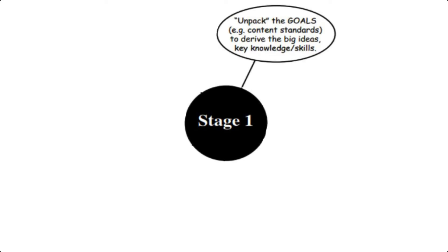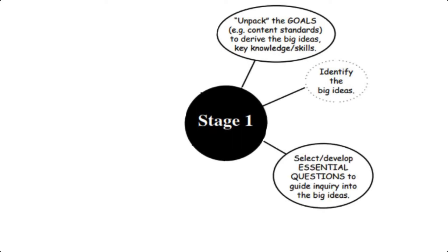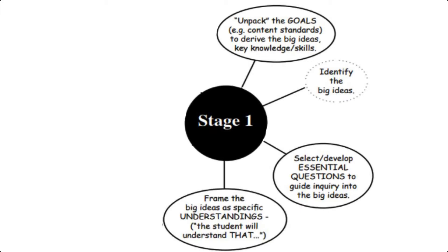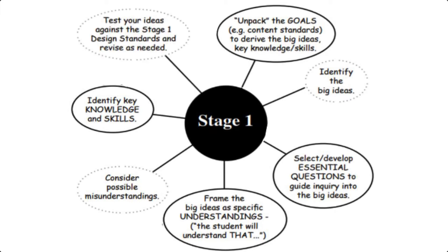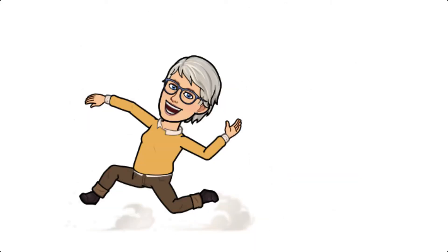Let's start with stage one. When we start with stage one, we're going to begin by unpacking the goals — that is, the content standards — in order to derive our big ideas, our key knowledge, and our skills. Our essential question here is: what do we want our students to be able to do when they leave and do on their own? This really has to do with transfer. We select or develop essential questions that help guide students in their inquiry to the big ideas, frame those big ideas as specific understandings — 'students will understand that' — consider possible misunderstandings, identify key knowledge and skills, and then test our ideas against the stage one design standards and revise as needed.